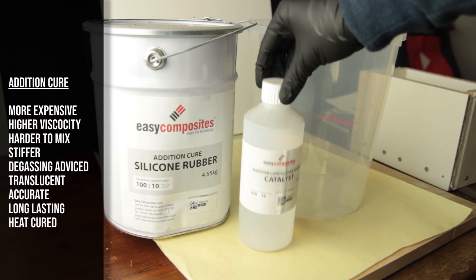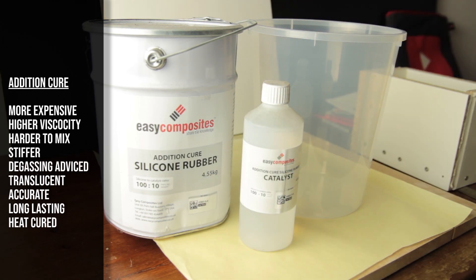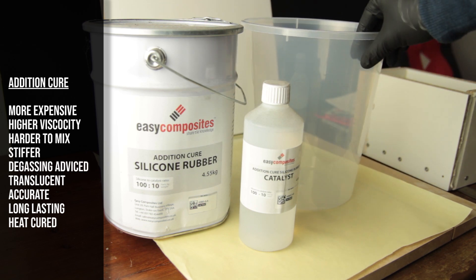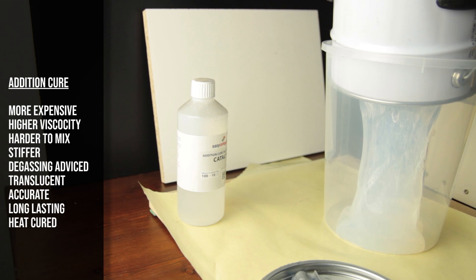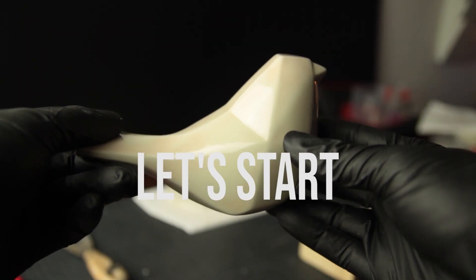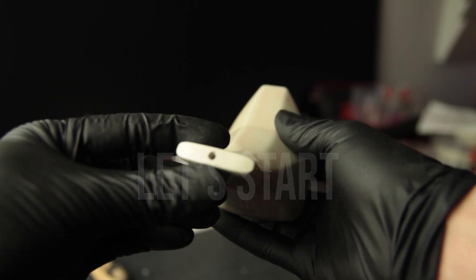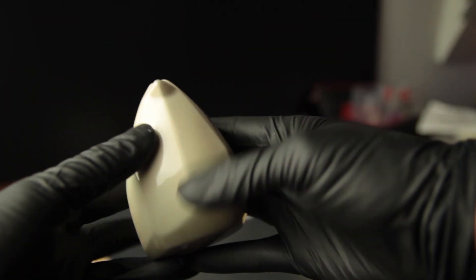In this tutorial we'll use the additional cure. So this is the better silicon in a way. The downsides is more expensive. It has a higher viscosity. So it's very difficult to mix. It's stiffer. So it's stable. It's more stable in its way and it's translucent. So this is the advantage when you're pouring closed parts that you want to see how the resin is flowing into your mold.